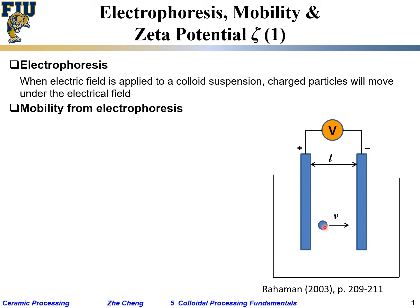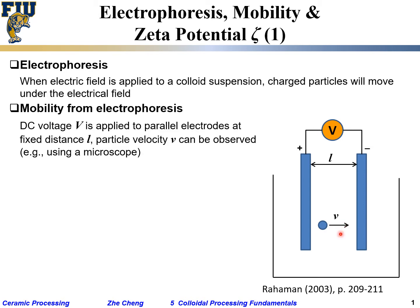DC voltage is applied to parallel electrodes at fixed separation l, and the particle velocity v can be observed or measured. For example, if you have a microscope or stereo scope, you can measure how fast the particles move. You know the distance, you can time it, and measure the velocity.